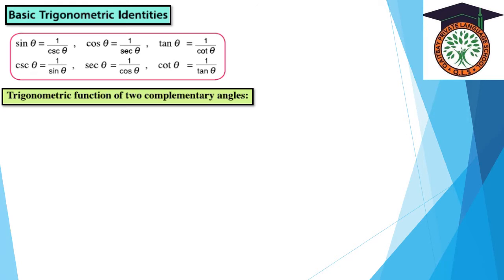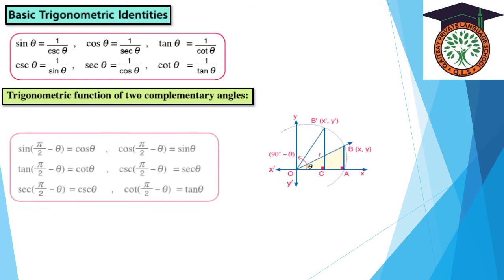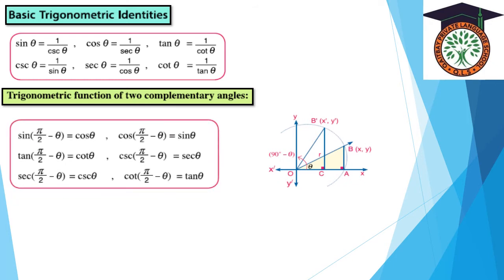Trigonometric functions of two complementary angles: sin(π/2 - θ) = cos θ; cos(π/2 - θ) = sin θ; tan(π/2 - θ) = cot θ.